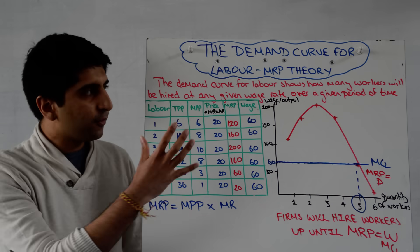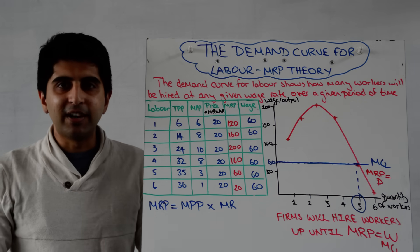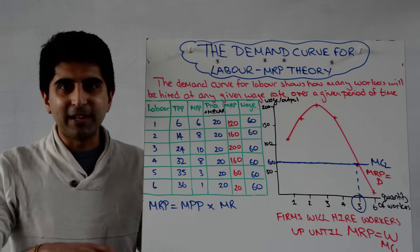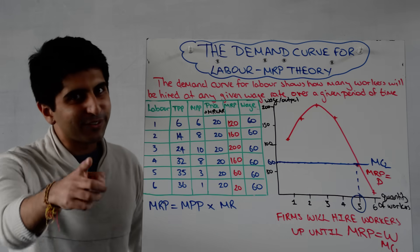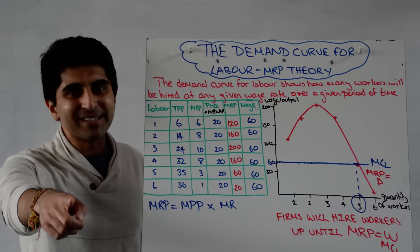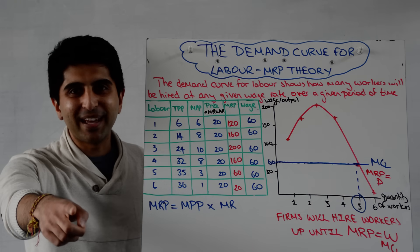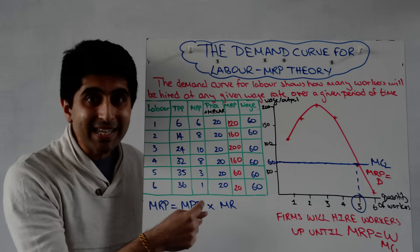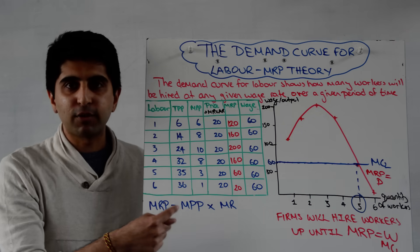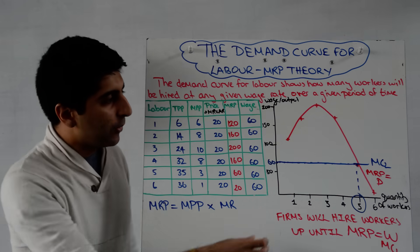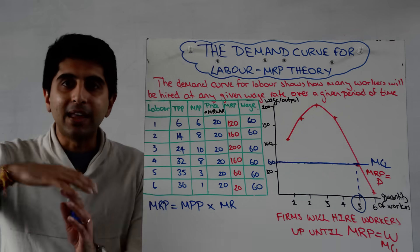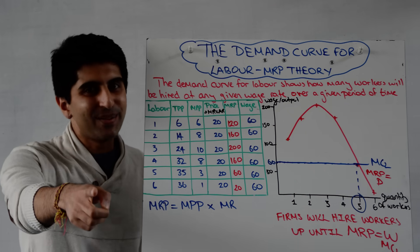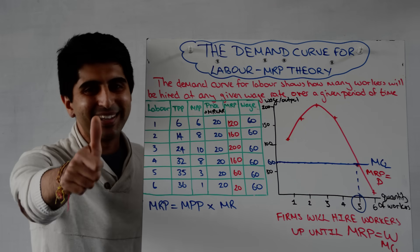That explains the demand curve for labour for an individual firm — hopefully that makes total sense. Thanks so much for watching. In the next video we'll critique marginal revenue product theory and look at the demand curve for labour in the total labour market. I'll see you then.